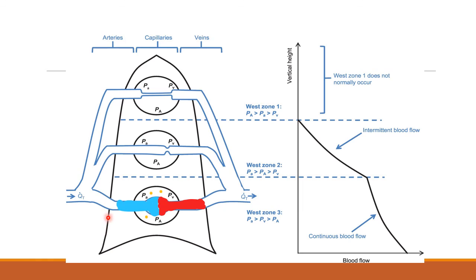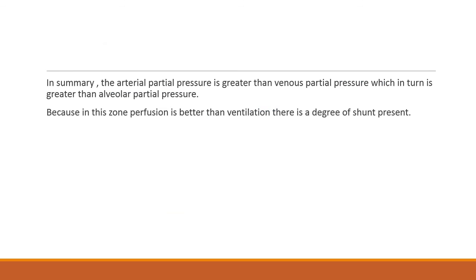In Zone 3, there is continuous blood flow because the blood flow depends upon the difference between the artery and the vein. The arterial partial pressure is higher than the venous partial pressure, which is higher than the alveolar partial pressure. The arterial partial pressure is greater than the venous partial pressure, which in turn is greater than the alveolar partial pressure. Because in this zone perfusion is better than ventilation, there is also a small degree of shunt.